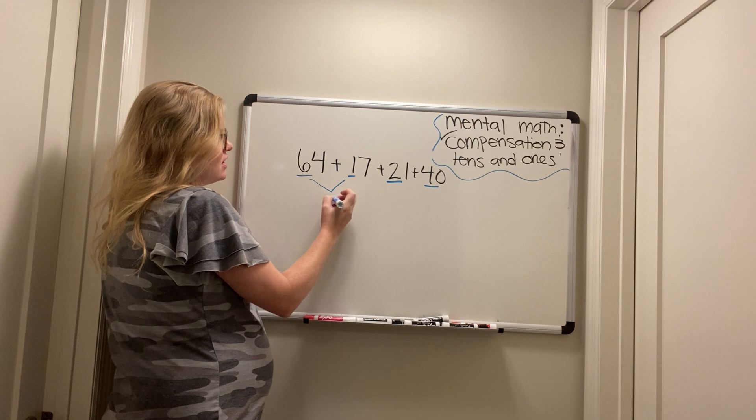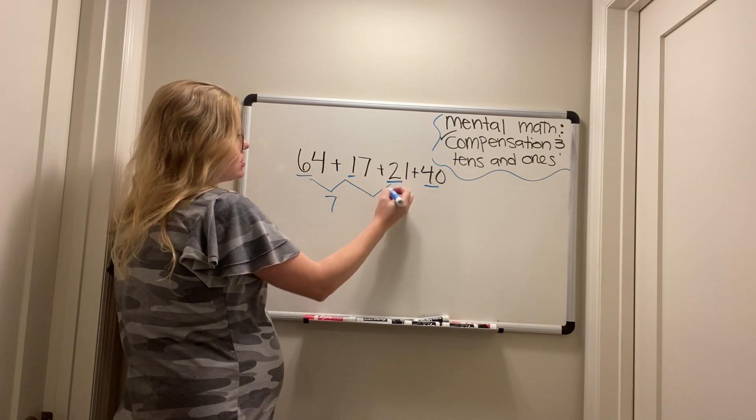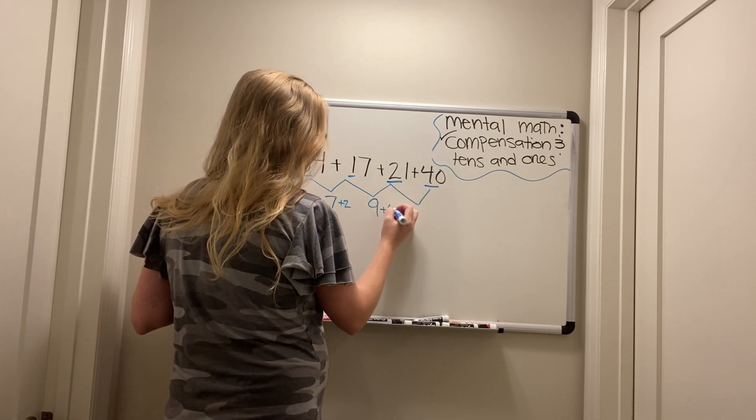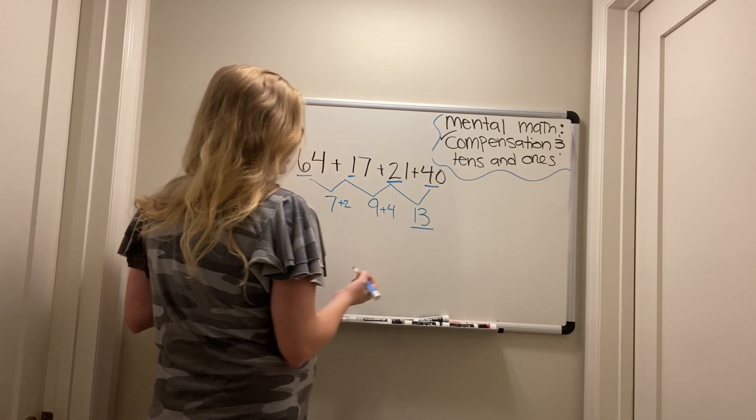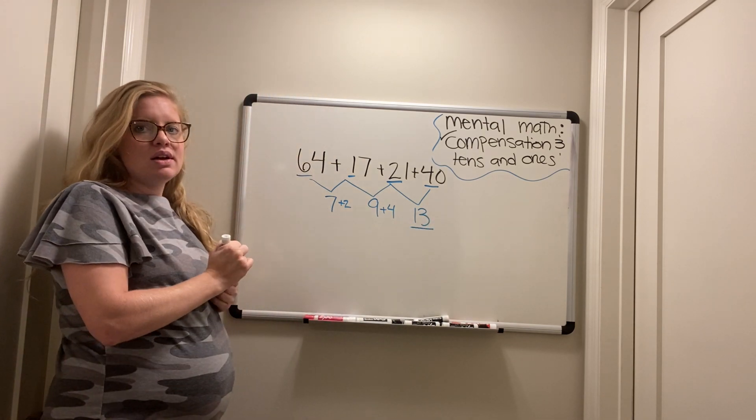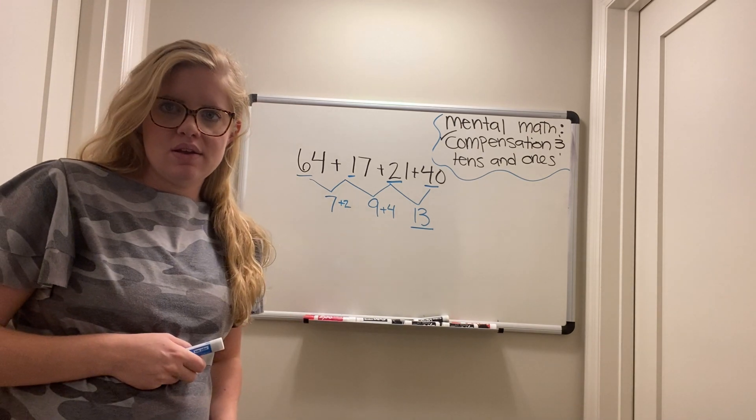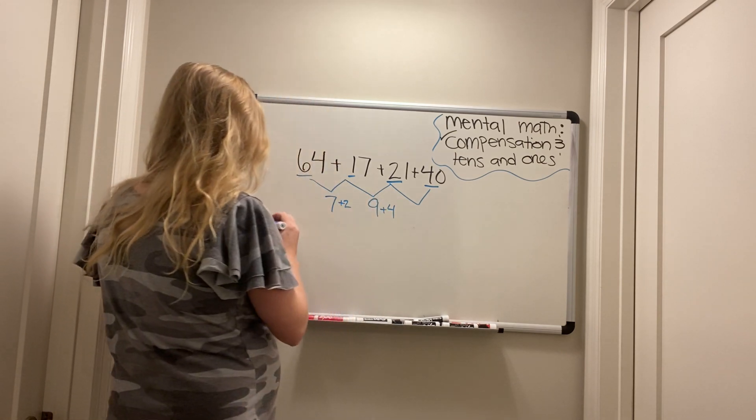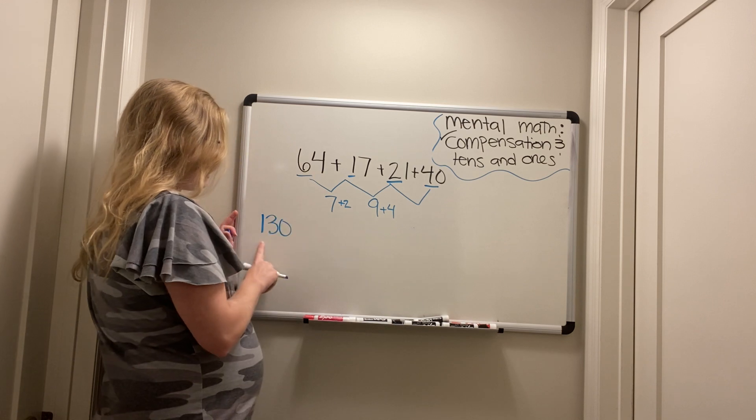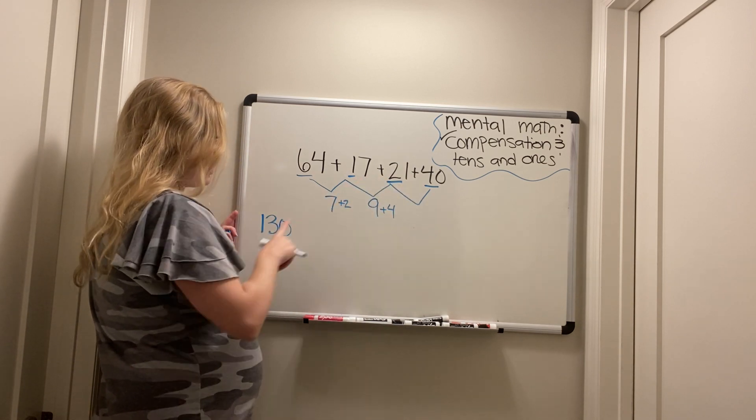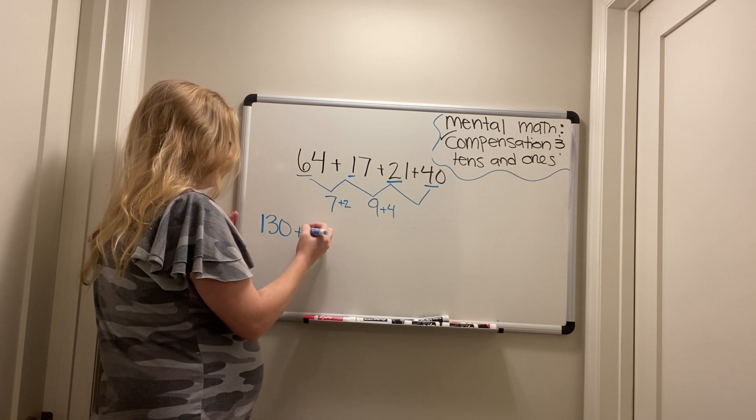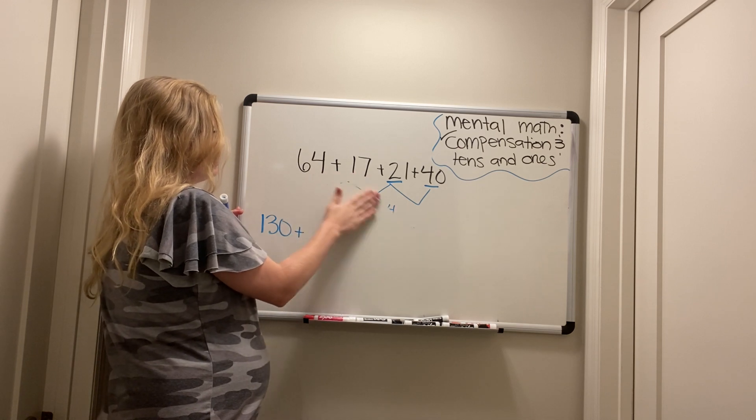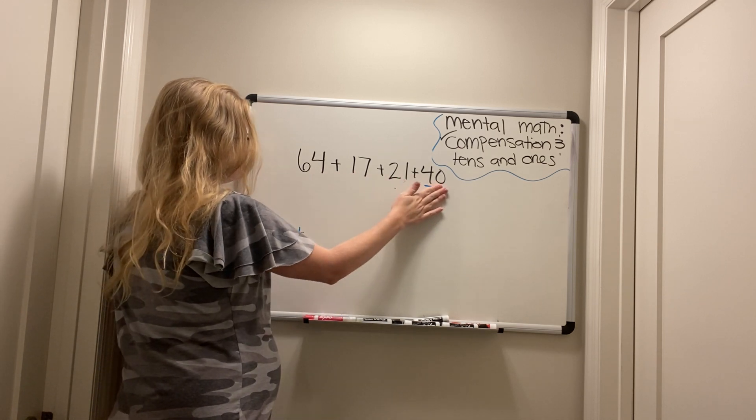Let's figure out how many tens we have all together. Six plus one is seven. Good. Seven plus two is nine. Nine plus four is 13. So we have 13 tens. Now what does 13 tens really mean? Good. 13 tens is 130. So, so far we've added up all these tens and we've gotten 130. Okay. So now we're done with the tens.